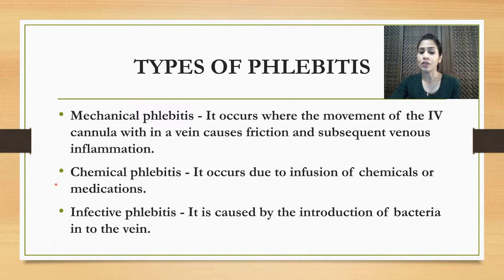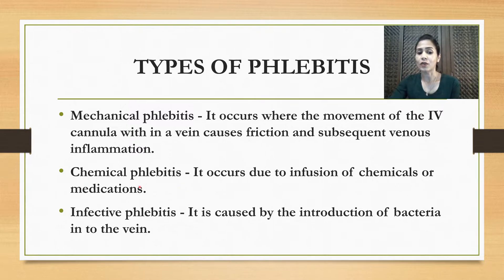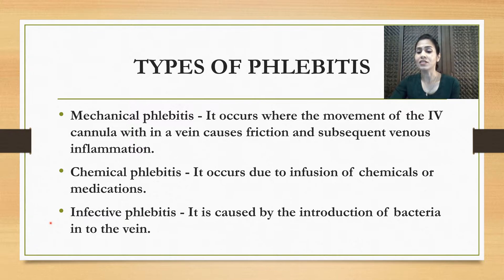That is known as mechanical phlebitis. The second type is chemical phlebitis, which occurs due to infusion of chemicals or medications. Many drugs have the capability to irritate the vein — for example, concentrated electrolytes or some antibiotics. Because of the medications the vein becomes inflamed; that is chemical phlebitis. The third type is infective phlebitis, caused by introduction of bacteria into the vein. This can happen if we are not following a sterile technique while inserting the cannula, or if after removing the cannula the puncture site is not properly secured with dressing, allowing microorganisms to invade and cause inflammation of the vein.